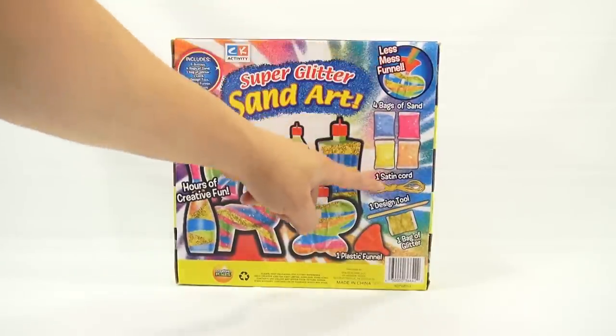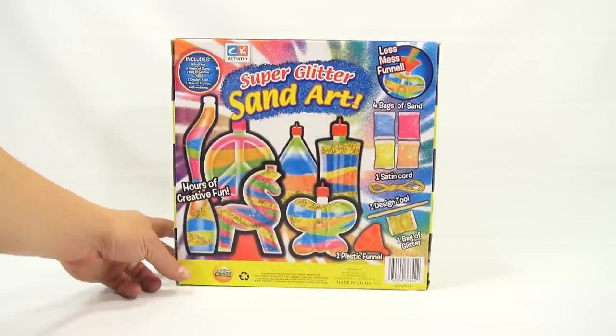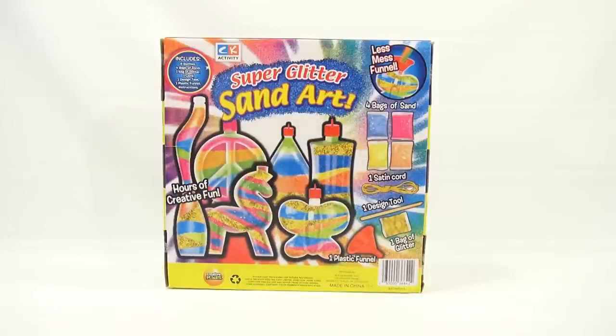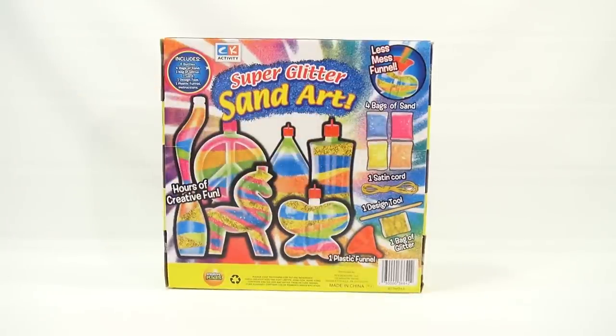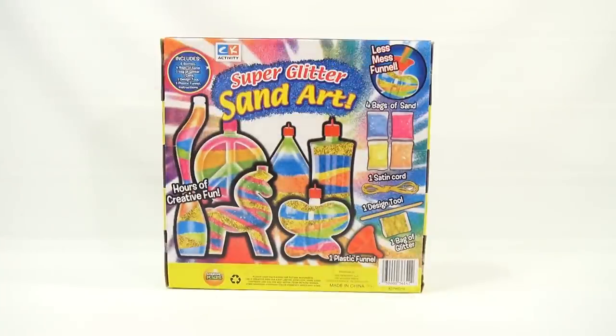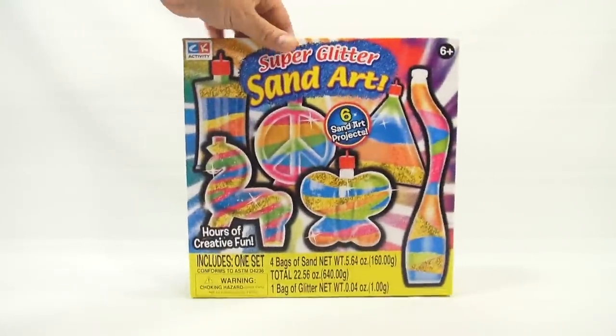This is a picture of everything you get, and it's a Creative Kids product. It includes six bottles, four bags of sand—these are the colors—one bag of glitter, one cord, one design tool, one plastic funnel, and the instructions. It says less mess funnel, so we have to figure this out.